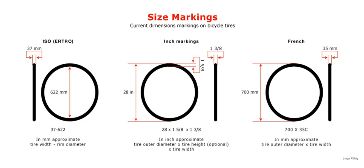ISO 5775-2 defines designations for bicycle rims. It distinguishes between straight-side rims, crochet-type rims, and hooked bead rims. Both crochet and hooked bead rims have inner profiles that curve inwards near the outside diameter of the rim to provide a hook that helps retain the tire bead under high pressure. On modern bikes, crochet rims are most common and hooked bead rims are rare. The distinction is primarily that hooked bead rims lack the defined bead seat of straight-side and crochet-type rims.